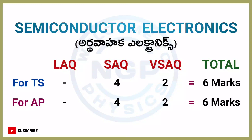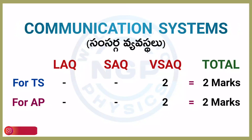Next chapter: Semiconductor Electronics. For both AP and TS students, one SAQ and one VSAQ — one 4-marks question and one 2-marks question. Chapter weightage is 6 marks.